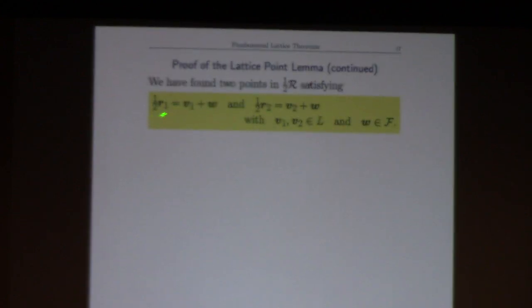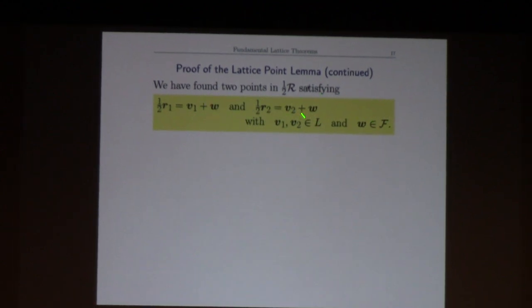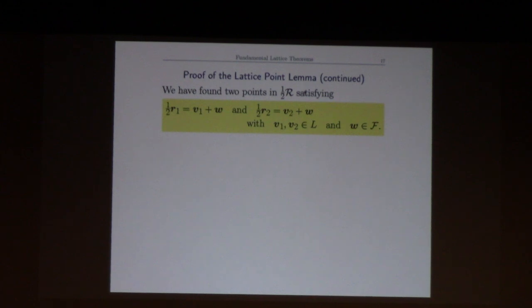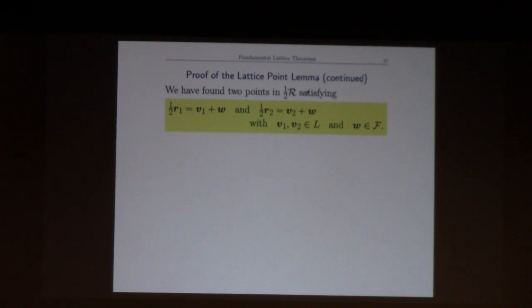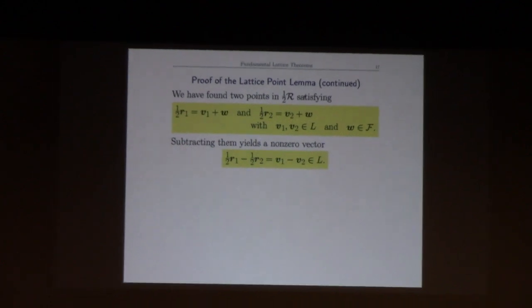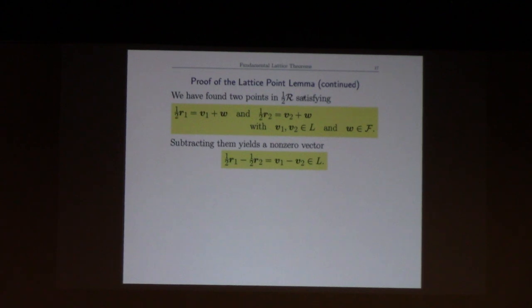So we have these two decompositions: v1 and v2 are lattice points, w is a fundamental domain point and it's in both of them. Obvious math thing to do if you have two equations and they have a common quantity in them, you subtract them. So if we take the difference of one half r1 minus one half r2, we get v1 minus v2 that's in the lattice. And it's not the zero lattice point.